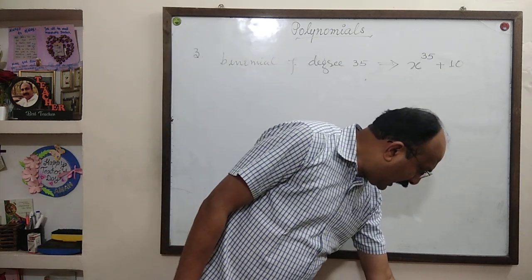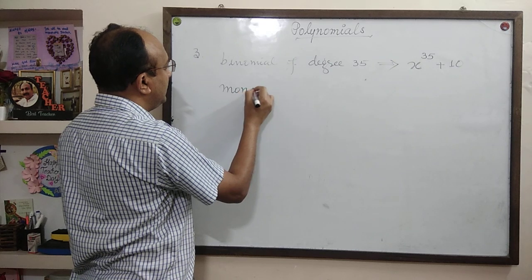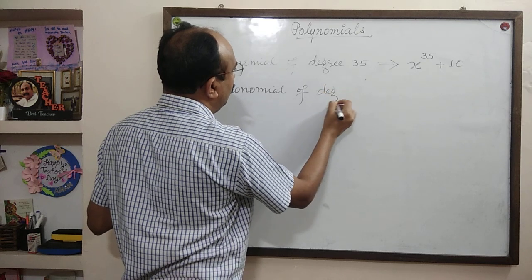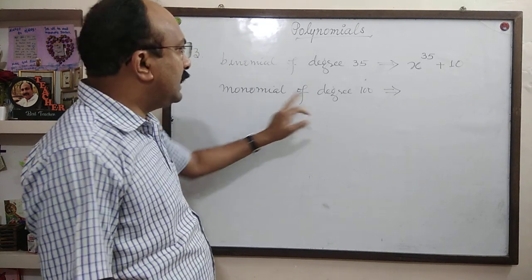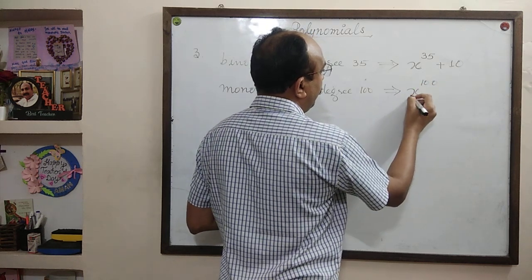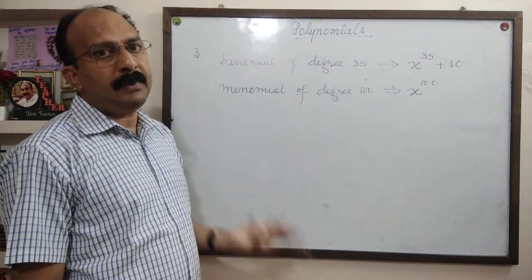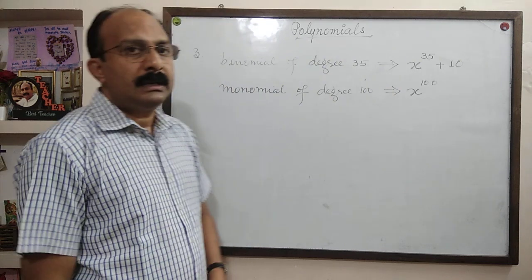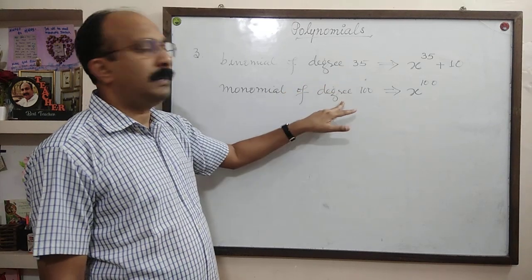For a monomial of degree 100: there must be only one term and the degree must be 100. Examples: x power 100, y power 100, t power 100, k power 100 — all are examples of a monomial of degree 100. This question was just to make you understand what is called binomial, what is called monomial, and what is meant by degree.